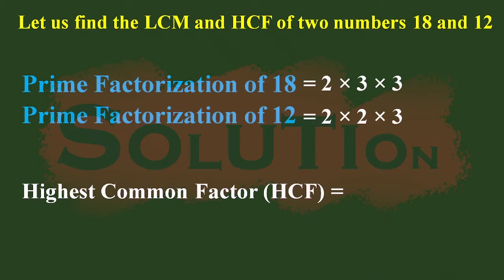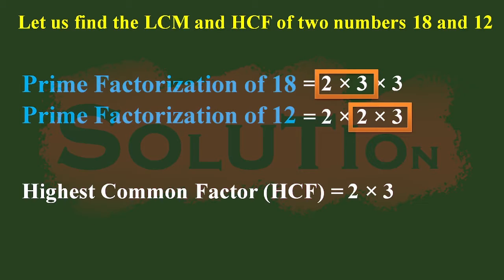To find the highest common factor between these two numbers, we identify the common factors. The common factorization is 2 into 3, which gives us 6. So the HCF is 6.